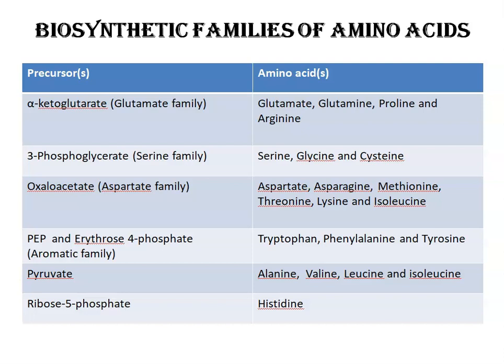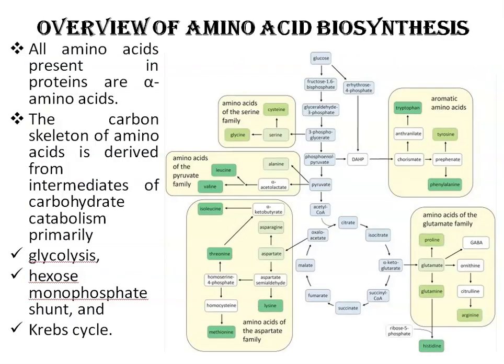In addition to these precursors, there is a notable intermediate in several pathways of amino acid and nucleotide synthesis: 5-phosphoribosyl-1-pyrophosphate (PRPP), which is synthesized from ribose-5-phosphate derived from the pentose phosphate pathway in a reaction catalyzed by ribose phosphate pyrophosphokinase enzyme. Before starting with the glutamate family, let us discuss amino acid biosynthesis in general.